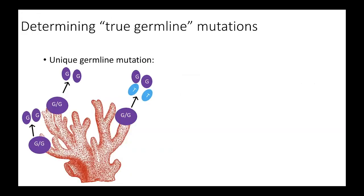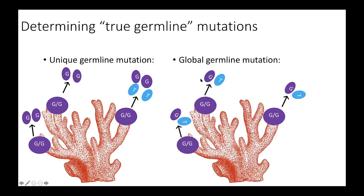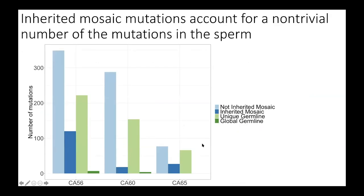We're also interested in what we call true germline mutations — mutations that were never seen in the parents. For unique germline mutations, they were seen in only one sperm pool; for global germline mutations, they were seen in all sperm pools and never in the parents. When we look at all four types of mutations together, we find that inherited mosaic mutations account for a non-trivial number of the mutations in the sperm. The inherited mosaic, the unique germline, and the global germline represent all of the mutations in the sperm from a particular colony. While those proportions are quite variable from colony to colony and from branch to branch, we see inherited mosaic and unique germline mutations in every single branch of the colony for all three colonies.